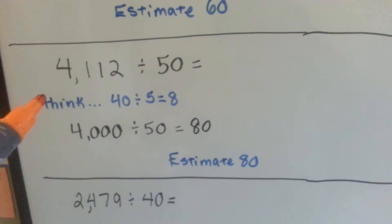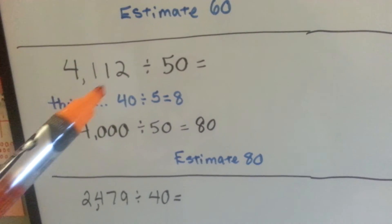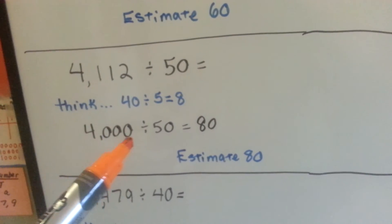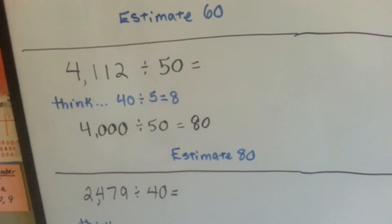For this one, we can round it to 4,000 and think 40 divided by 5 is 8, so 4,000 divided by 50 would be 80.